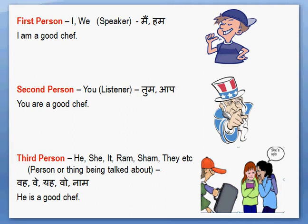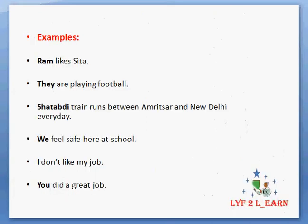He is a good chef — they, them, etc. — this is called the third person. A few examples will make it clear. Ram likes Sita. Sita loves Ram. I am talking to you about them, so this is third person.